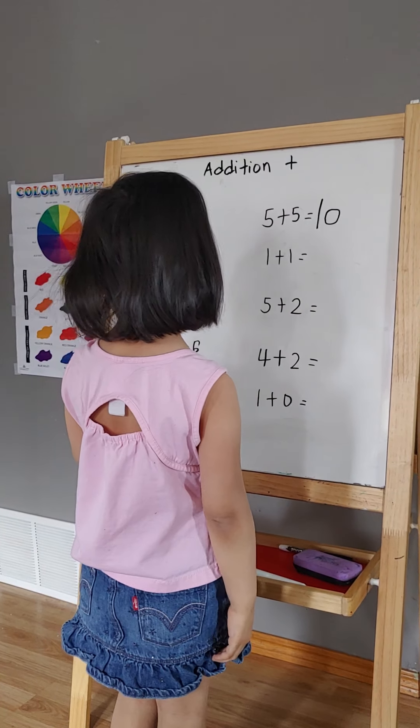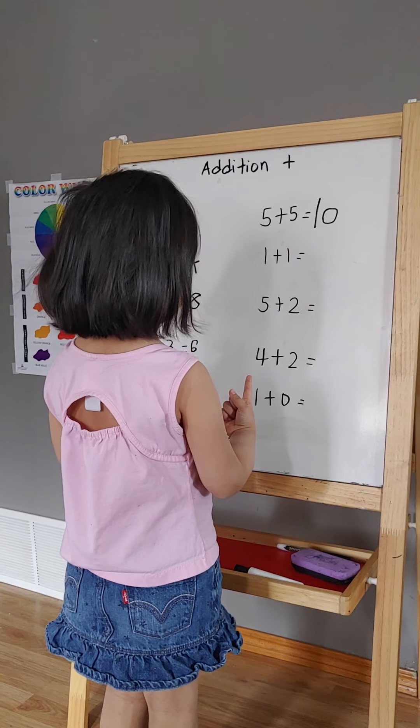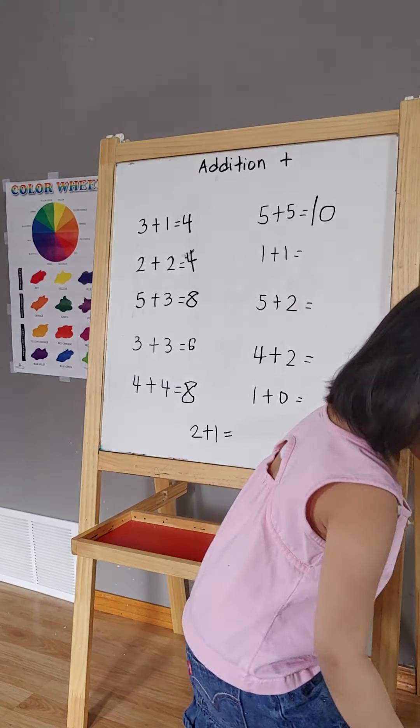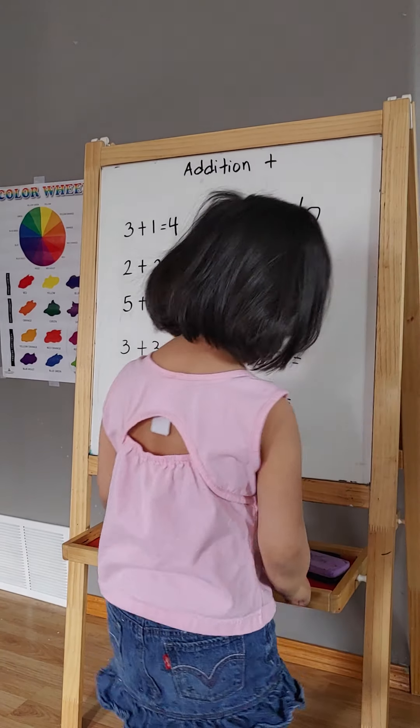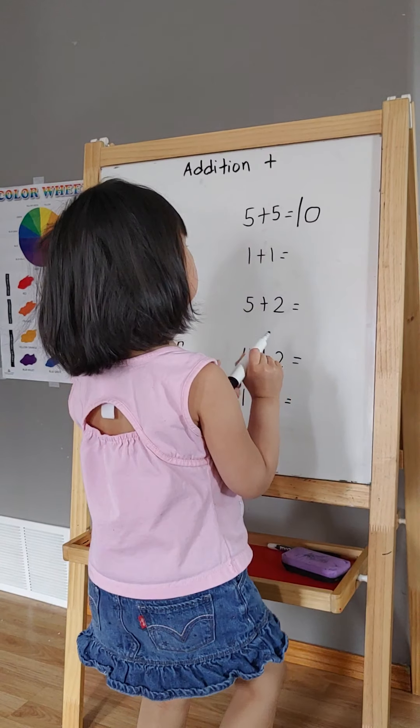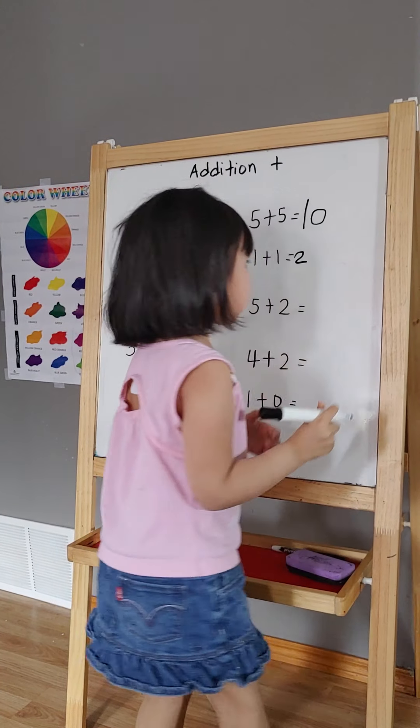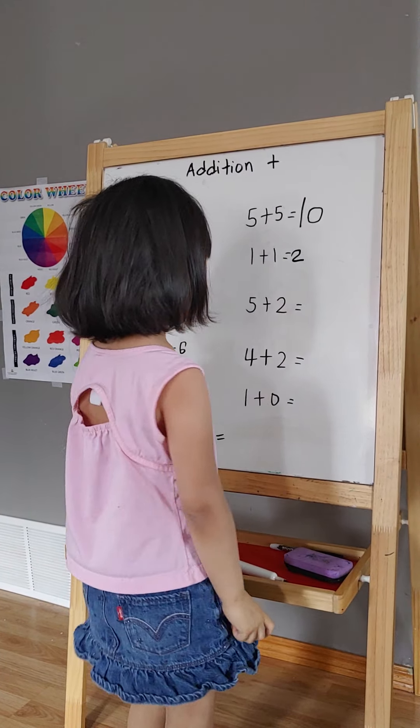1 plus 1. So put 1 on my finger and put 1 on my finger. I count that. 1, 2. 1, 2. Good. Next.